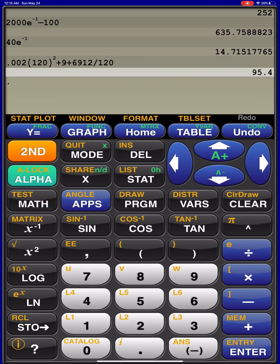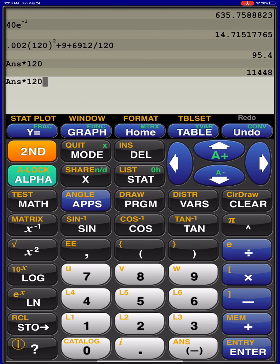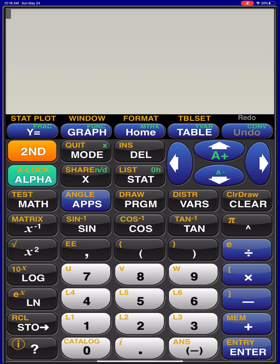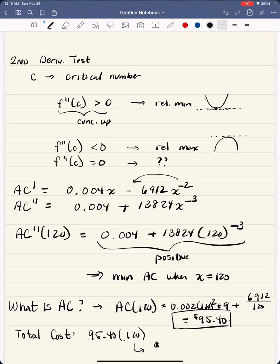And that number you might have noticed was over there too. 95.40 times 120 equals 11,448. And there we have it.